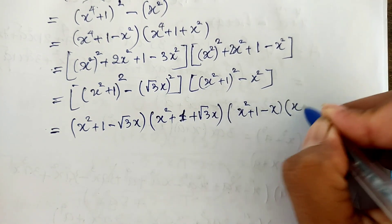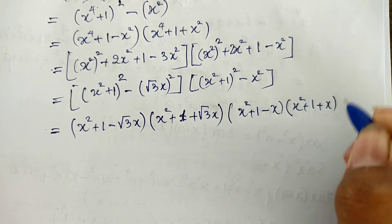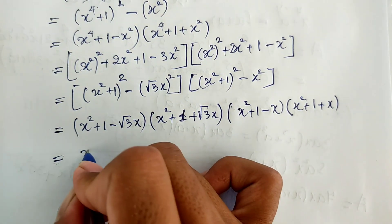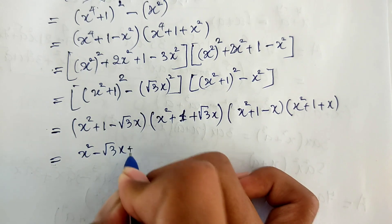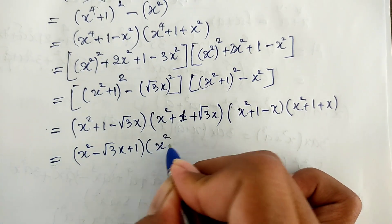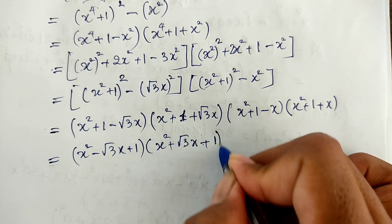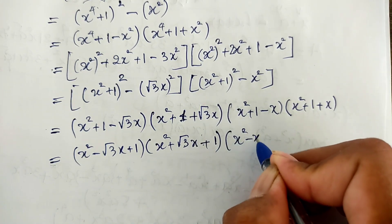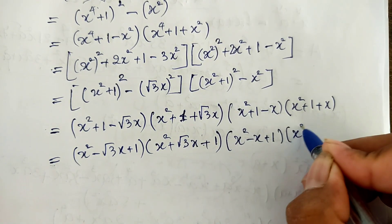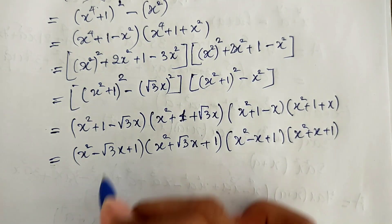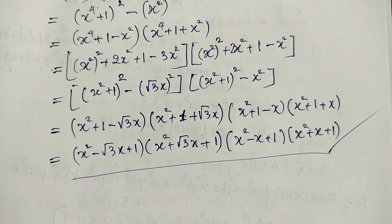So the final factored form gives us four factors: x squared minus square root of 3 plus 1, multiplied by x squared plus square root of 3 plus 1, multiplied by x squared minus square root of 3 plus 1, multiplied by x squared plus square root of 3 plus 1. Our polynomial has four factors, each of second degree. Thank you for watching — if you like my videos, please don't forget to subscribe to my channel for more exciting videos. Goodbye!